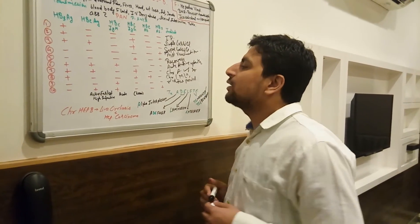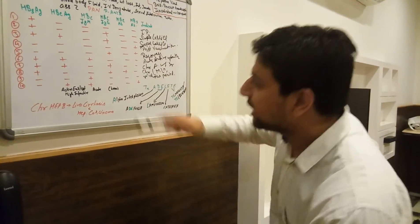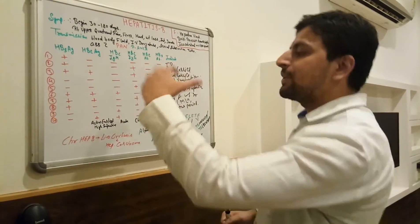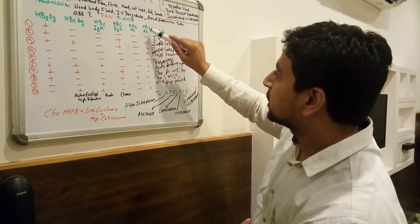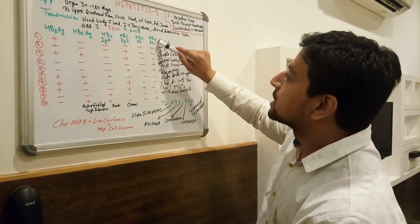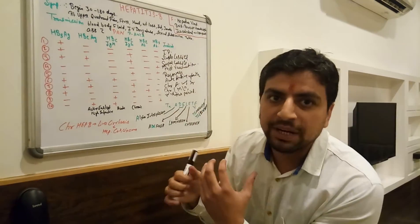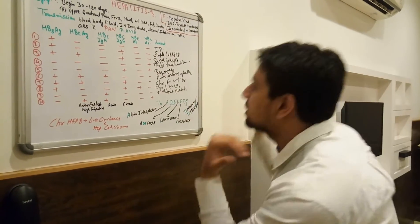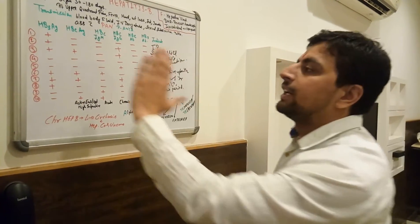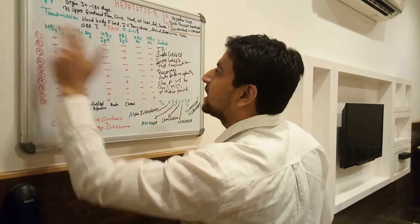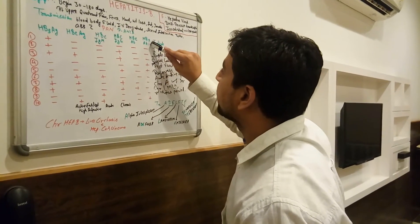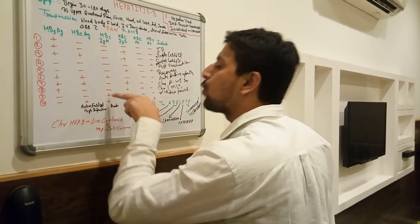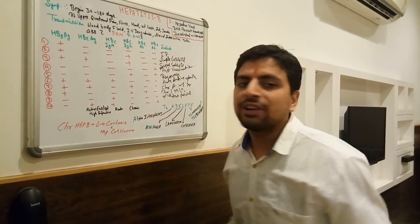The window period means the time during which Hepatitis B surface antigen is disappearing and Hepatitis B surface antibodies are developing. It is the period between the disappearance of HBsAg and the appearance of HBsAb against the infection. Only HBcIgM is detectable during this window.